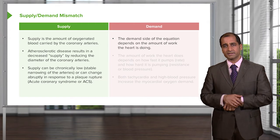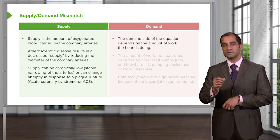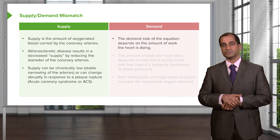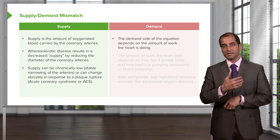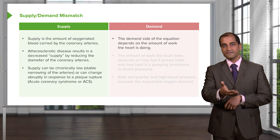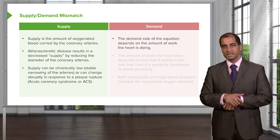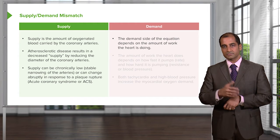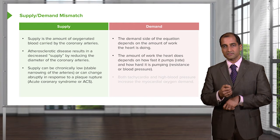How do you form ATP in the mitochondria? It's called the electron transport chain or oxidative phosphorylation. And this all begins with the process of glycolysis and the TCA cycle, feeding into your ETC. But you must have oxygen there. The point is you have too much demand maybe because of the increased heart rate or the pumping — how hard it is pumping — which refers to resistance or blood pressure.